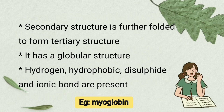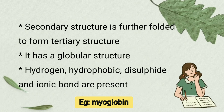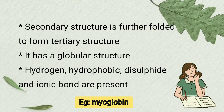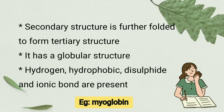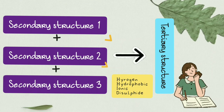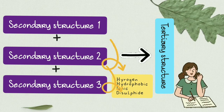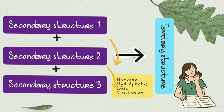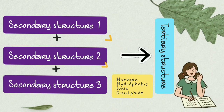Secondary structure is further folded to produce the tertiary structure of protein. It has a globular shape. Hydrogen bonds, hydrophobic bonds, ionic bonds, and disulfide bonds are present in tertiary structure. An example is myoglobin.